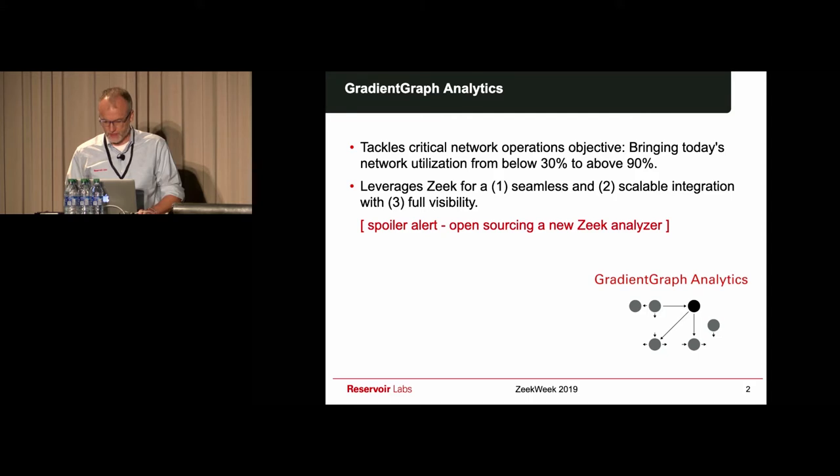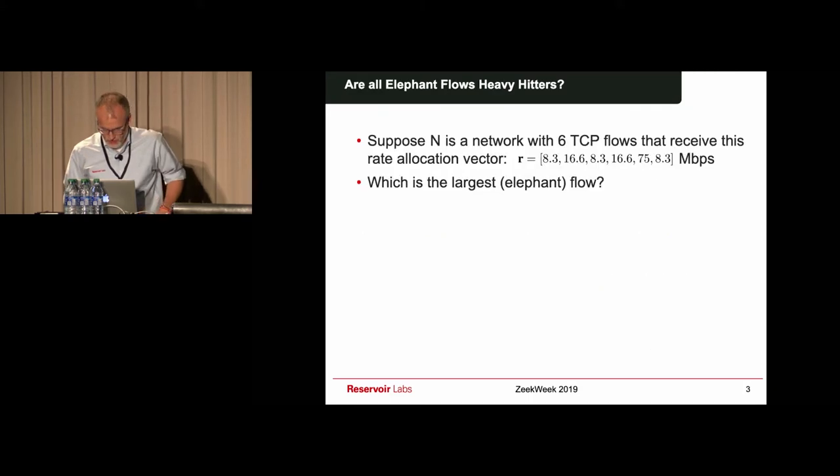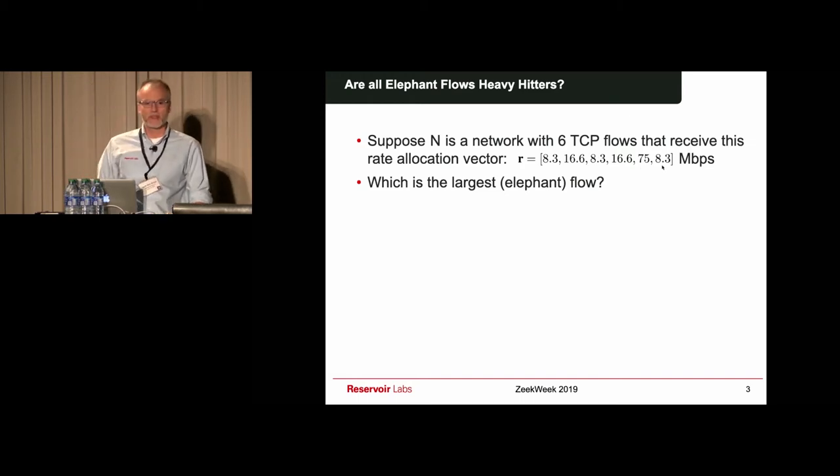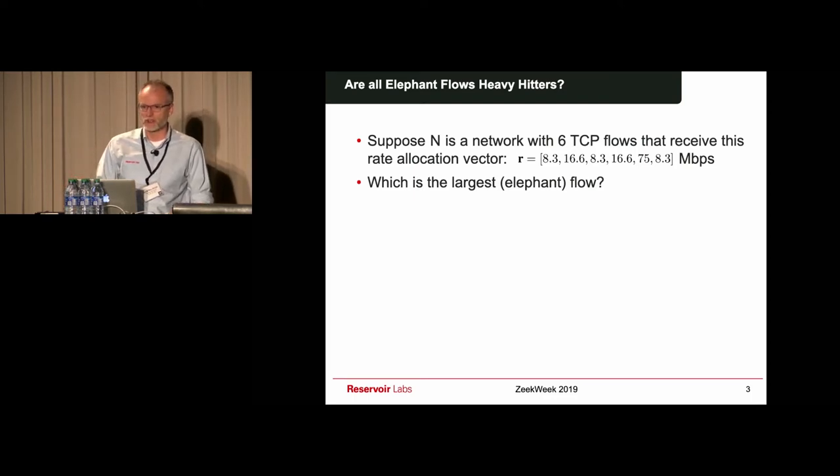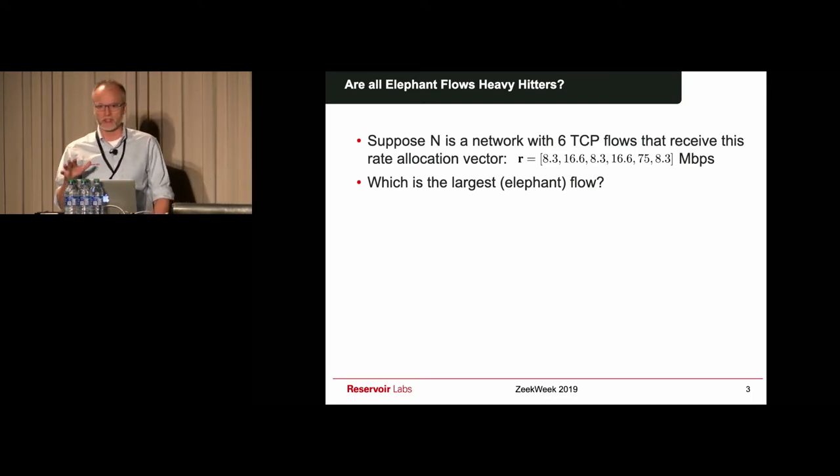Let me start with a simple toy example. Suppose that I give you a network, and this network has six TCP connections. And suppose that you know the transmission rate of these six TCP connections: 8.3, 16.6, 8.3, 16.6, 75, and 83. Suppose I ask you which one is the flow that is having the highest impact on the overall performance of the network.